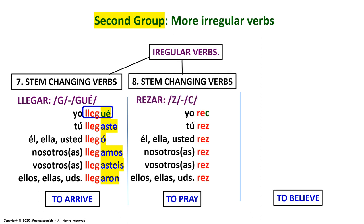Number eight: stem changing verbs. REZAR, meaning 'to pray.' We are going to change the letter Z into a C. In past tense: Yo recé. Tú rezaste. Él, ella, usted rezó. Nosotros, nosotras rezamos. Vosotros, vosotras rezasteis. Ellos, ellas, ustedes rezaron. Again, focus on the first person singular: yo recé — the letter Z changes into C. The rest of the verb is conjugated as a regular verb.